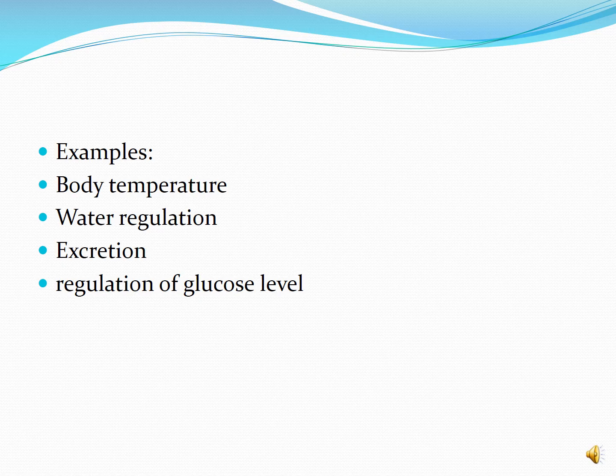There are many examples we can take from our internal environment. Here I will explain just two: body temperature regulation and regulation of glucose levels. These are the two important examples from which we can easily understand what homeostasis actually is.